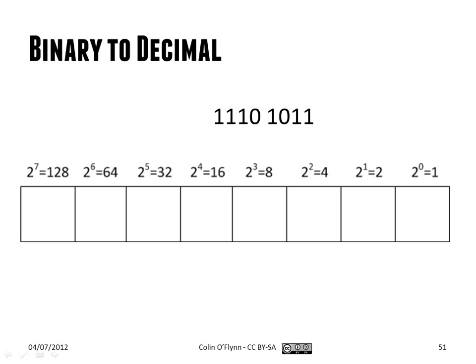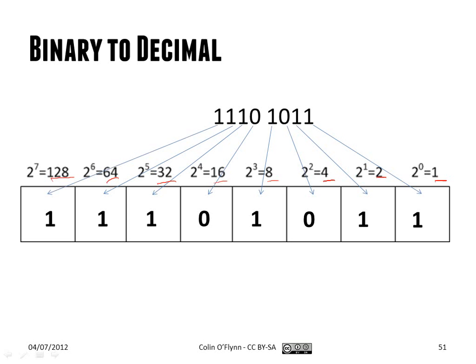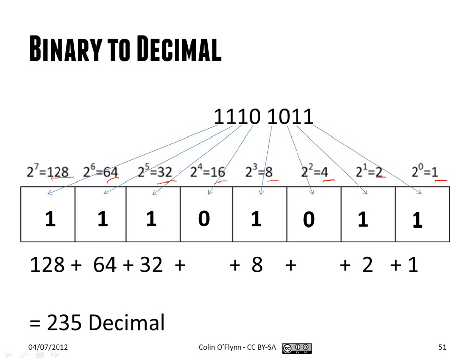To convert a number, in a similar fashion to how decimal works, you add up the equivalent value of each digit. Because we only deal with 1 and 0, it's even easier — you either add a place value or you don't. In this example, converting from binary to decimal, you figure out the value for each place and add them up.